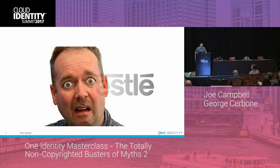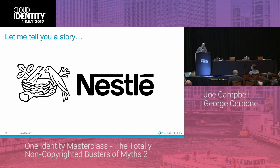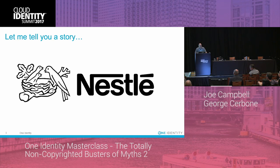The story's about Nestle. They chose One Identity as their identity and access governance vendor, and the project went very well — my colleagues in Europe did a fantastic job. When we sat down with them, one of the things they said was: we've got all these cloud applications and we want to use them as part of the identity and access governance solution. We said, no problem, our platform is really flexible and really powerful. How many cloud applications would you say you want to onboard? And they said 2,000.